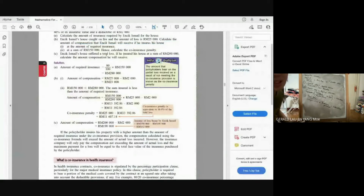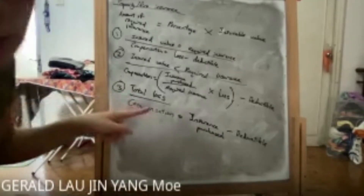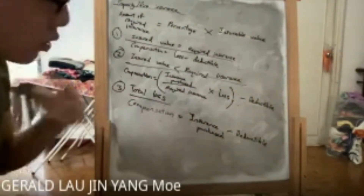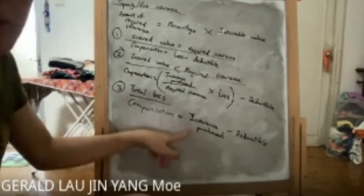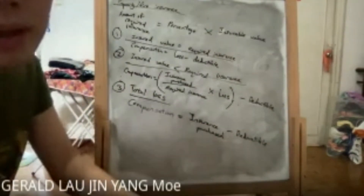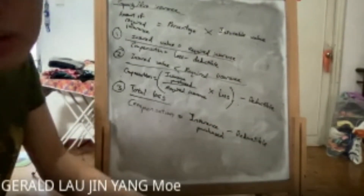Part (iii): Encik Ismail's house suffered a total loss, and he insured at RM200,000. Using the total loss formula: Compensation = Insurance Purchased − Deductible = RM200,000 − RM2,000 = RM198,000.